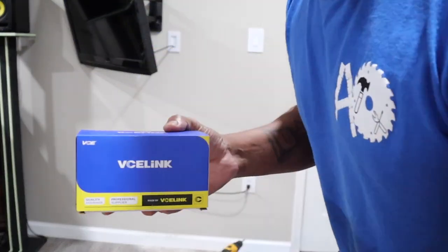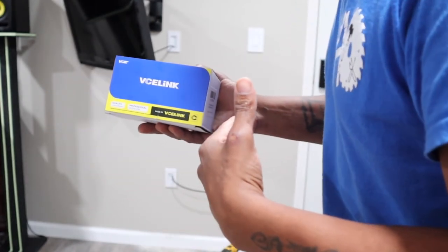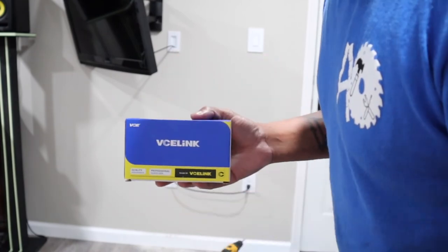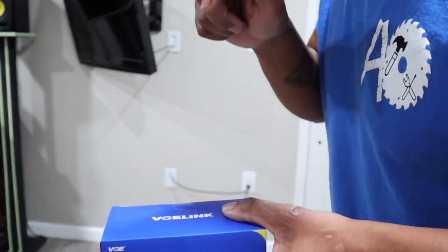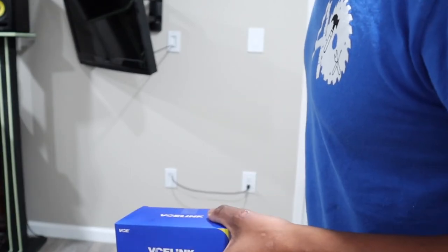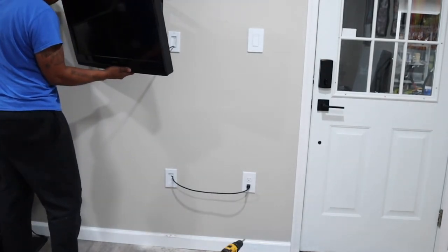All right you guys, so that is the end to the VCE Link. This is how you hide your wires. So if you want to hide your wires, this is a product to get. That's about it. Obviously, you can see there is no wires there.